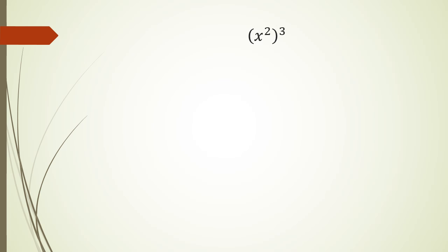The long way of doing this: we know anything to the power of three is multiplying that variable by itself three times. So in this case we can write this as x squared times x squared times x squared. And if you remember, multiplying index expressions — if the bases are the same we actually add all the powers. So in this case it's going to be x to the power of two plus two plus two, and so this can be written as x to the power of six.